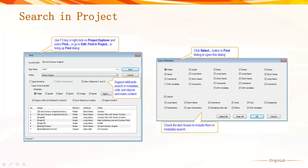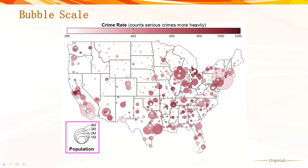For Bubble Plot, we introduced the Bubble Scale object, which can be displayed in either a linear layout, or as shown in this graph, as a nested layout. You can double-click it for further options.